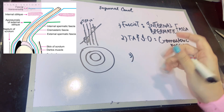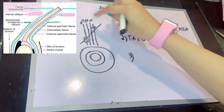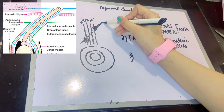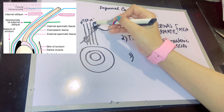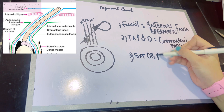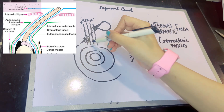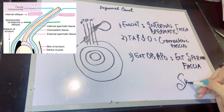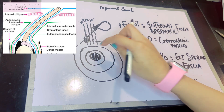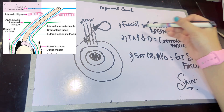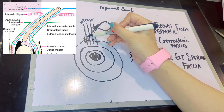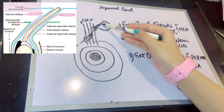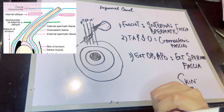The next layer acquired around the content is from the external oblique aponeurosis, since from here the structures go down into the scrotum and must acquire this layer. This is the outermost covering, called the external spermatic fascia, after which comes the skin. So the content is covered first by the internal spermatic fascia, then the cremasteric fascia with the cremasteric muscle, and finally the external spermatic fascia.